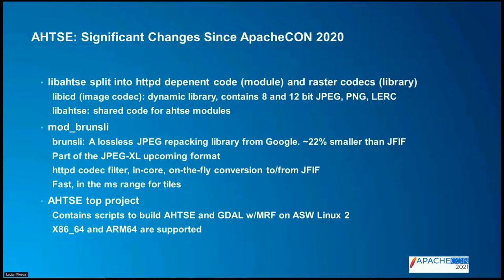Mod Brunsli is a new addition. It's a lossless JPEG repacking library from Google. The output is 22% smaller than JFIF — the standard JPEG format. It's a lossless repacking, so you can pack it into a smaller space and then unpack it back to the original JFIF, which can be piped into legacy applications without any changes, making it really easy to retrofit. It is part of the upcoming JPEG XL format, which is about to be standardized.